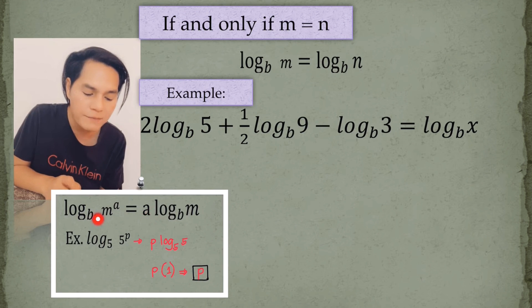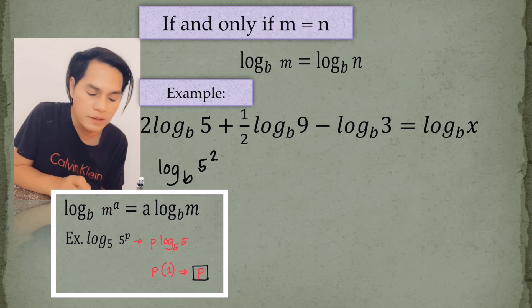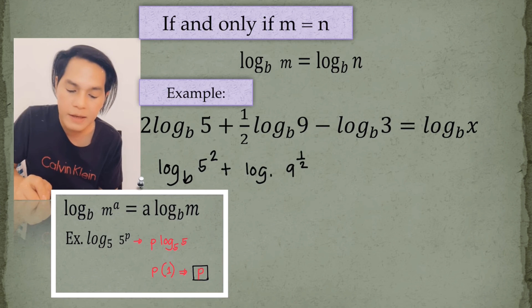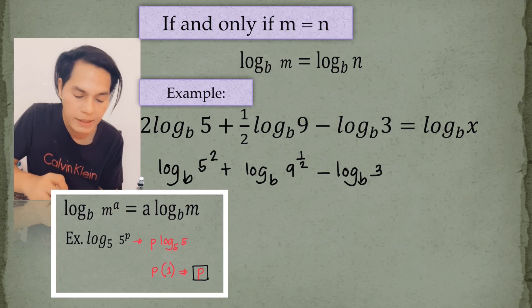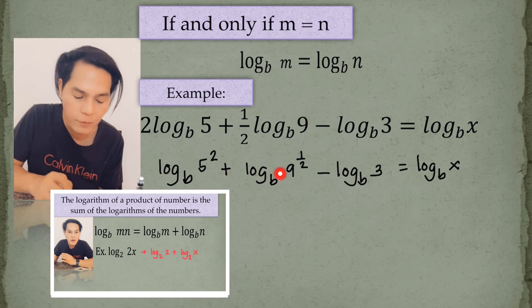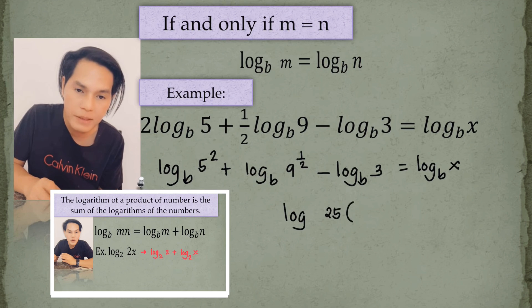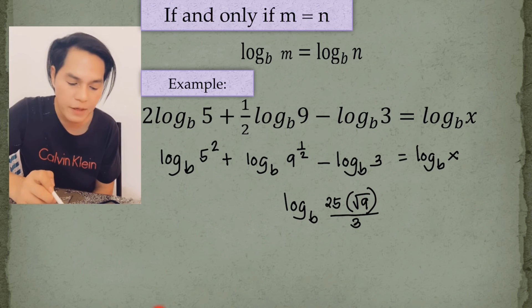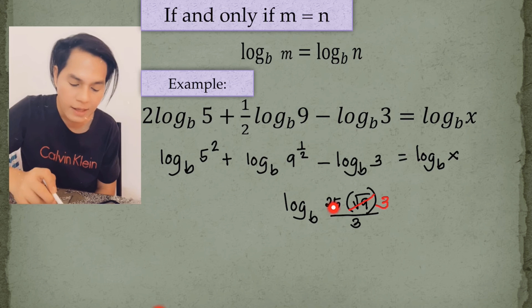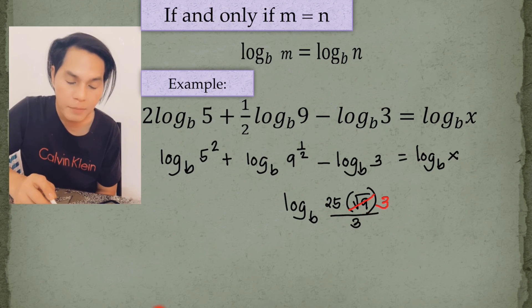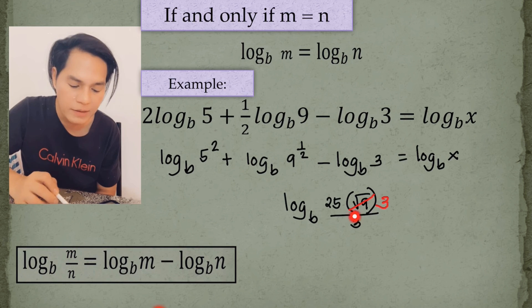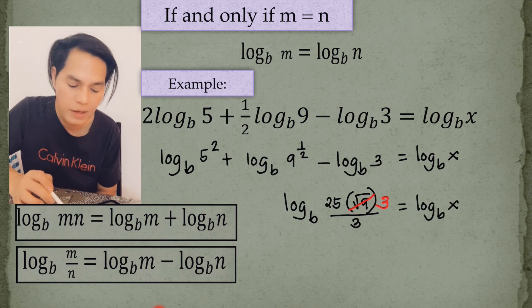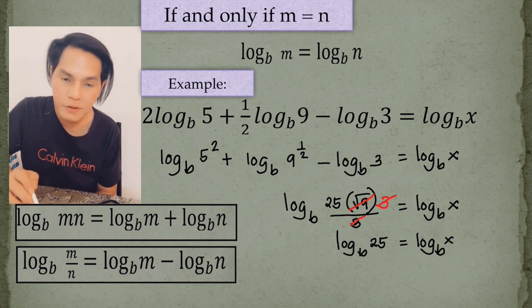The same procedure applies for one-half: it becomes the power of 9. Since addition means product, we multiply them together — 5 squared is 25, and 9 to the power of one-half is the square root of 9, which equals 3. Since we have subtraction, that represents division, so we divide the product 25·3 by 3. The 3s cancel, leaving the log of 25 to the base b, which equals the log of x to the base b.